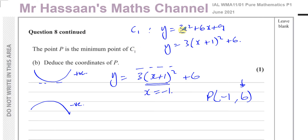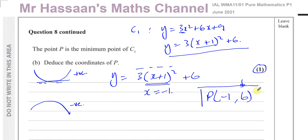You could also find the minimum by differentiating and setting the gradient to zero, but since we've already completed the square it's unnecessary — it's worth one mark and we can read off the answer directly. Understanding why this works is better than just memorizing the rule, and it will help with deeper understanding of other topics later on.